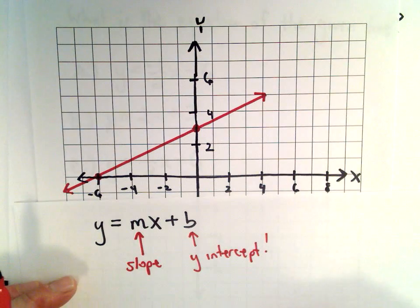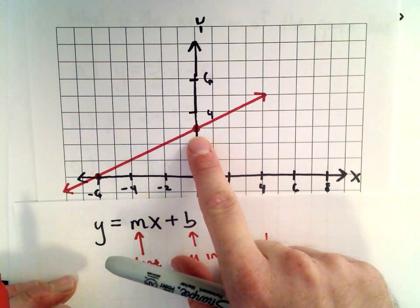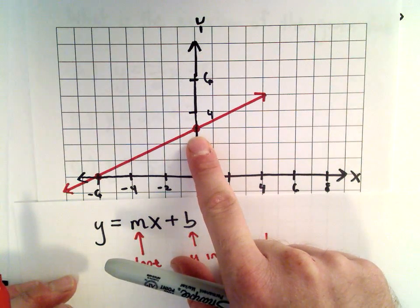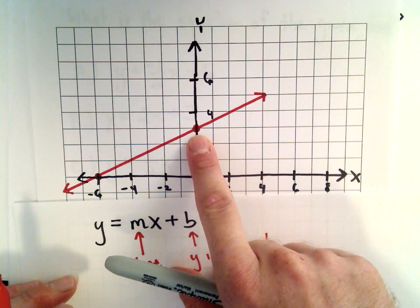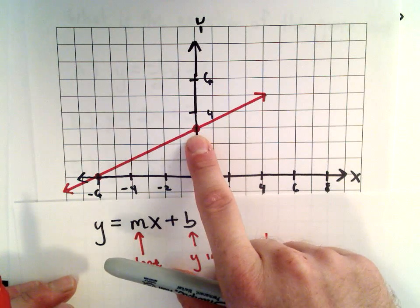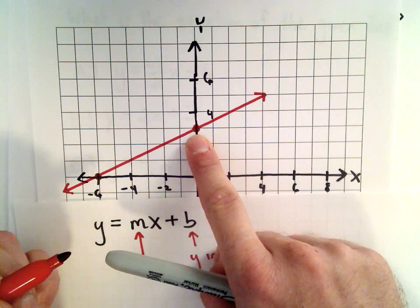And the value b represents the y-intercept. The y-intercept is basically given to us, because the y-intercept is where the line crosses the y-axis, and it's crossing the y-axis at the point, at the y-value of 3.